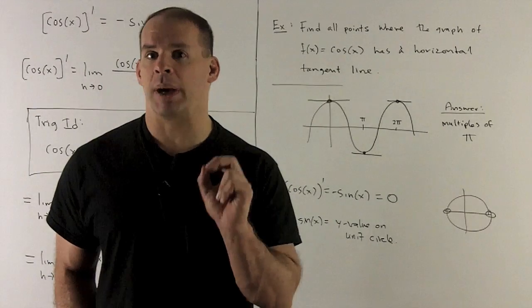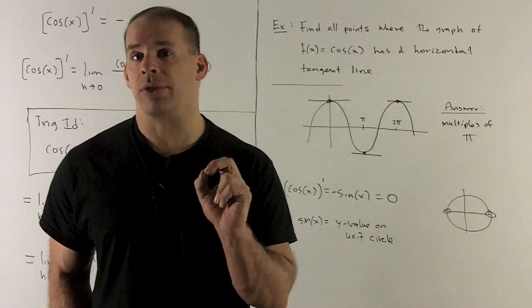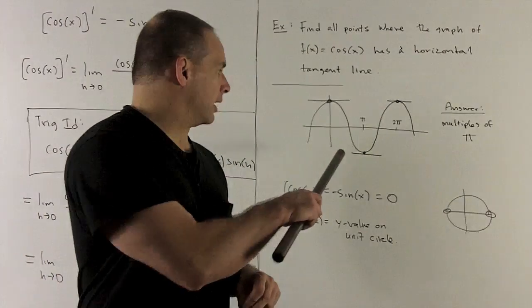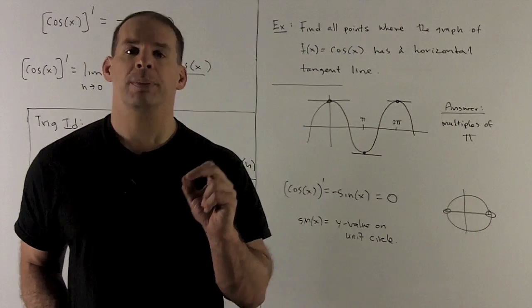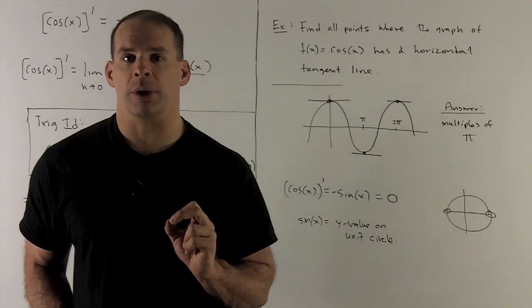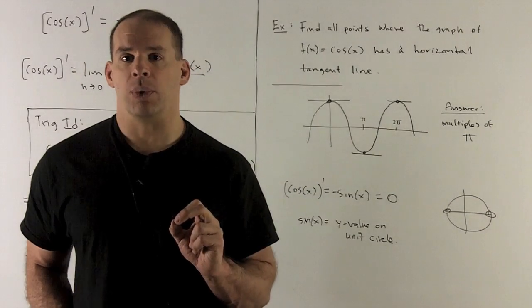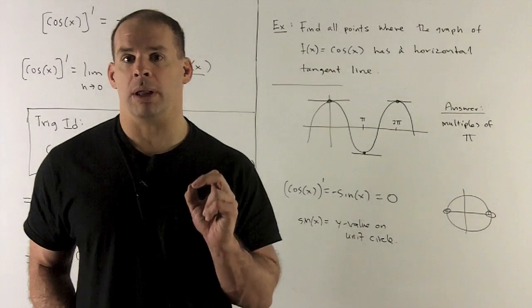Now, we can get that just by looking at the picture. If I draw the graph of cosine, we're looking at this. And then we notice horizontal tangent lines are going to appear at the top and bottom of the wave.